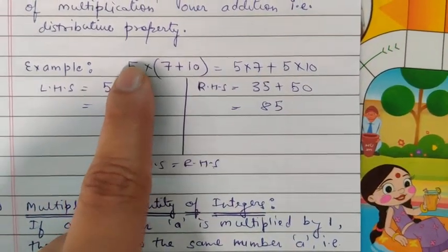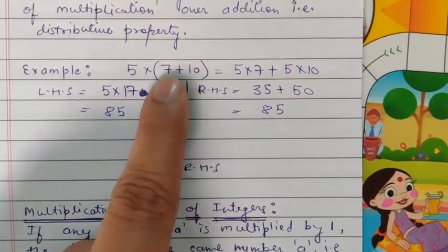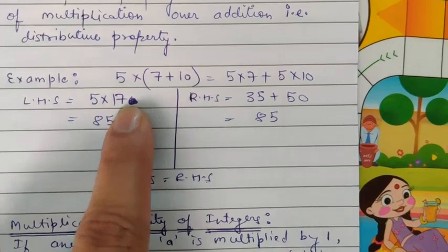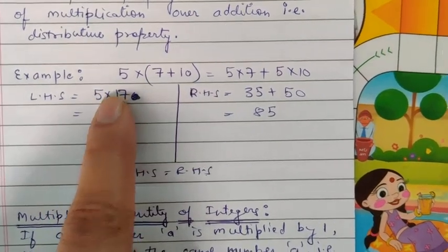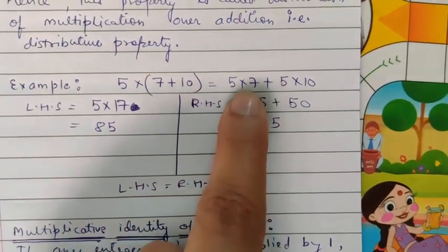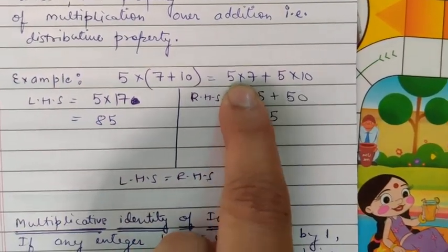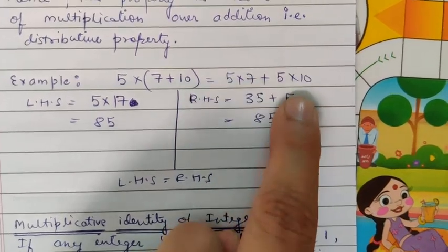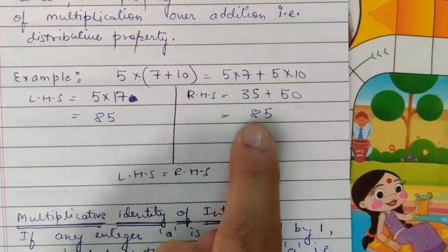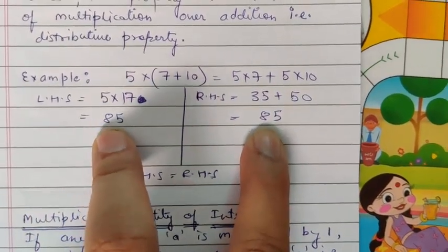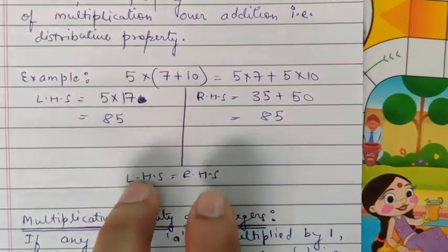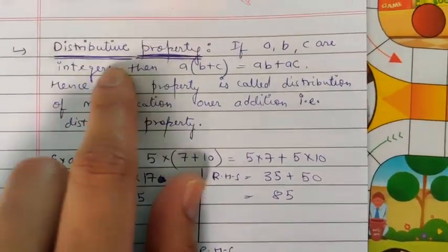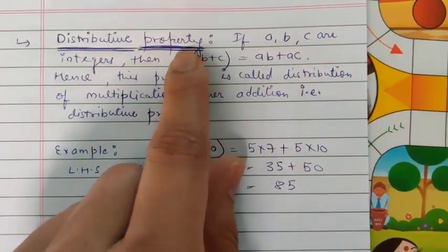This is the left hand side and this is the right hand side. We will solve individually. On the left hand side, we first solve the bracket: 7 + 10 = 17, then 5 × 17 = 85. On the right hand side, 5 × 7 = 35 and 5 × 10 = 50, then 35 + 50 = 85. Same answer — left hand side equals right hand side. That means we have proved the distributive property.